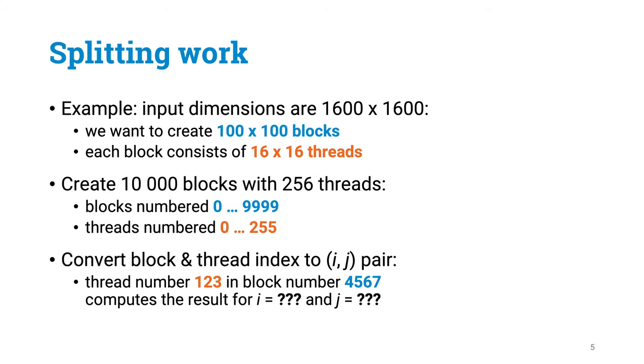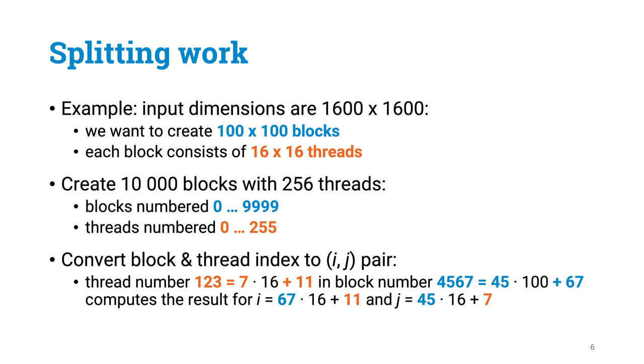And then in the kernel we can check what is our block index and thread index, and then we will know which element i, j of the result matrix we are supposed to compute. It takes maybe a moment to figure out the math, but maybe something like this does the trick.